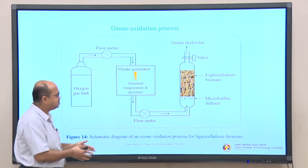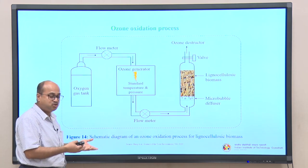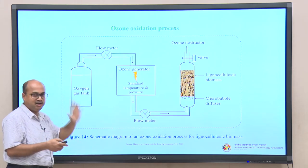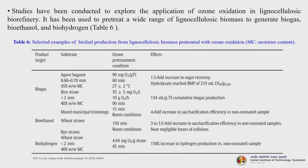The ozone oxidation process schematic shows: oxygen from a gas tank flows through a flow meter to an ozone generator maintained at standard temperature and pressure. The ozone is fed to a packed bed column containing lignocellulose biomass with a microbial diffuser for contact. Ozone exiting the column passes through an ozone destructor that converts it back to oxygen. This can be done easily at lab scale requiring only an ozone generator and oxygen cylinder. Studies have explored ozone oxidation in lignocellulose biorefinery to generate biogas, bioethanol and biohydrogen; a reference table lists selected examples.